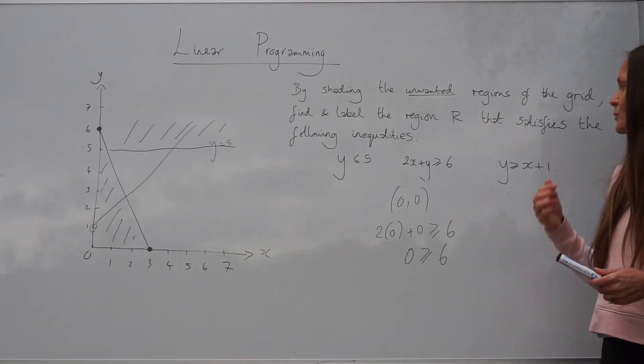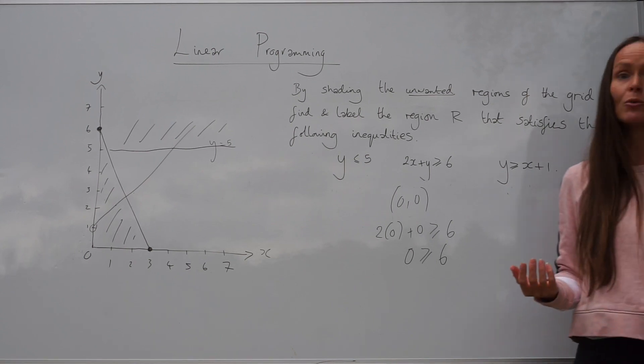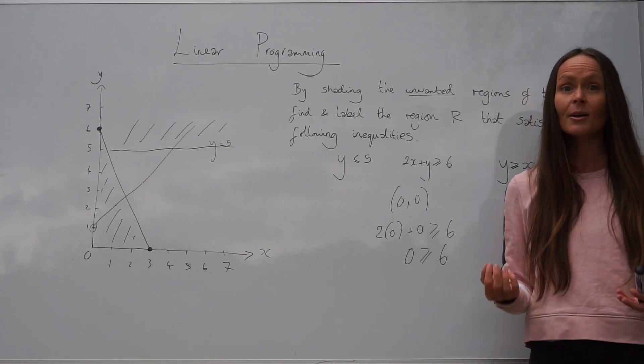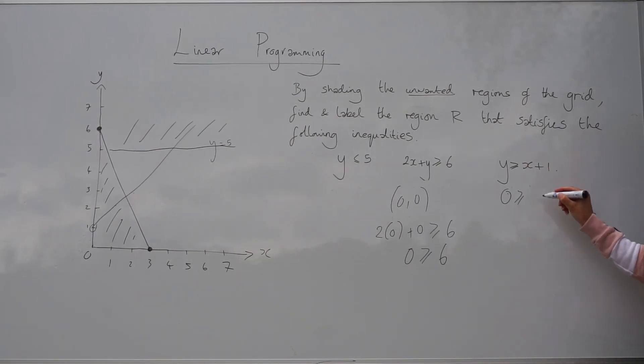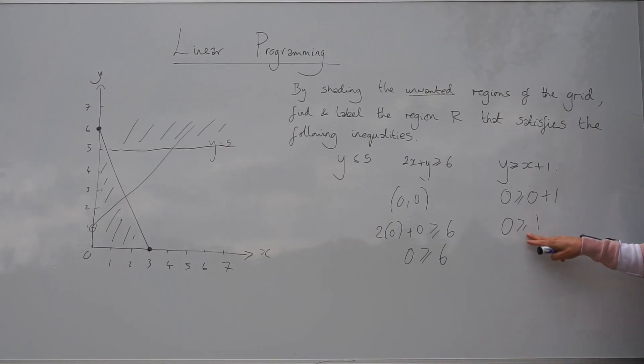Let's use that same method for the last one. So we're going to use the same coordinates, 0, 0, and substitute them into this inequality. So we need to change the y value to 0, the x value to 0, and then calculate what that gives us. So 0 plus 1 is 1. 0 is greater than or equal to 1.